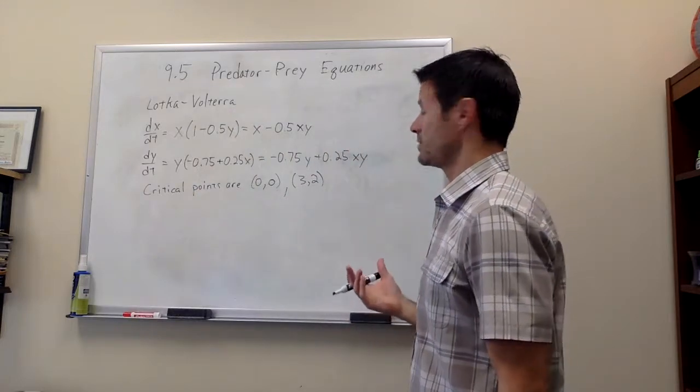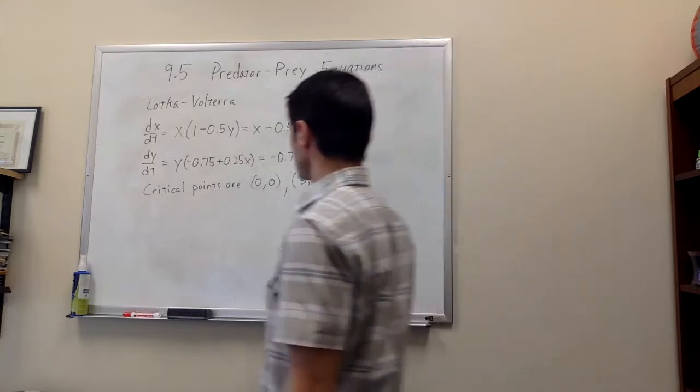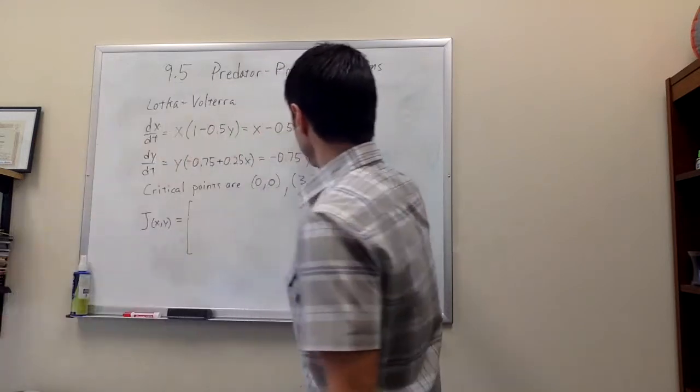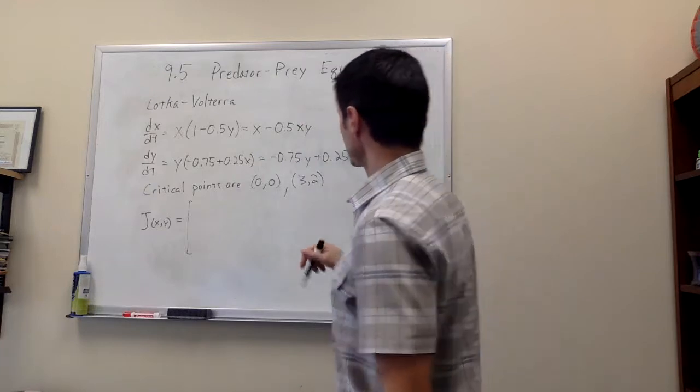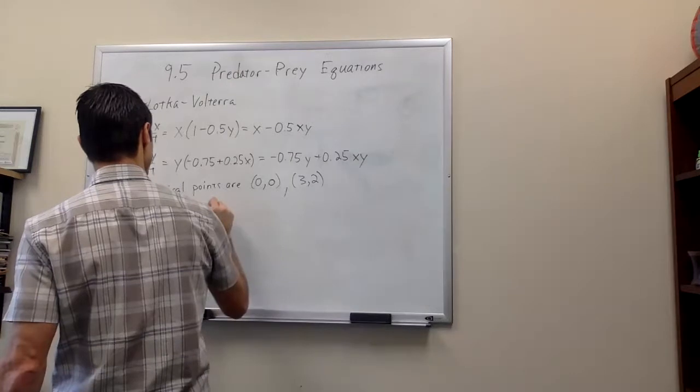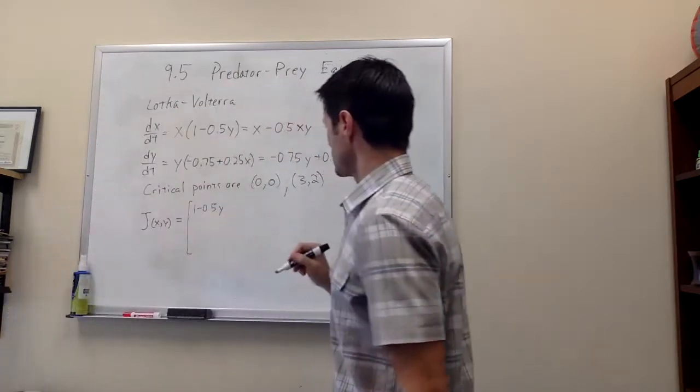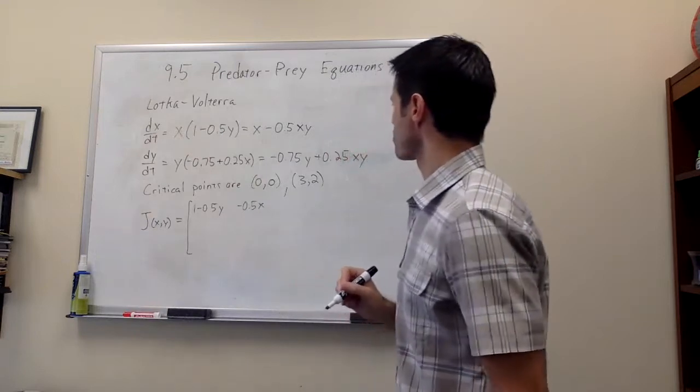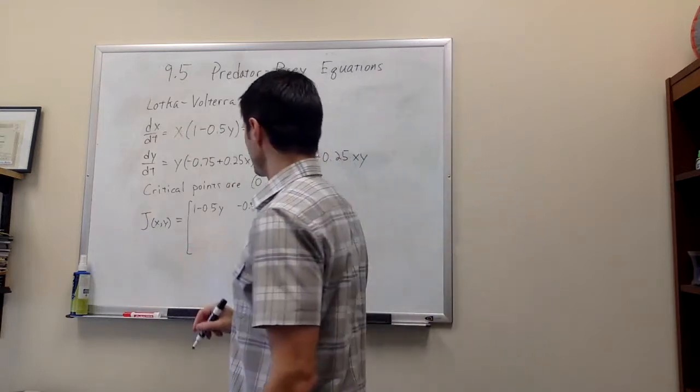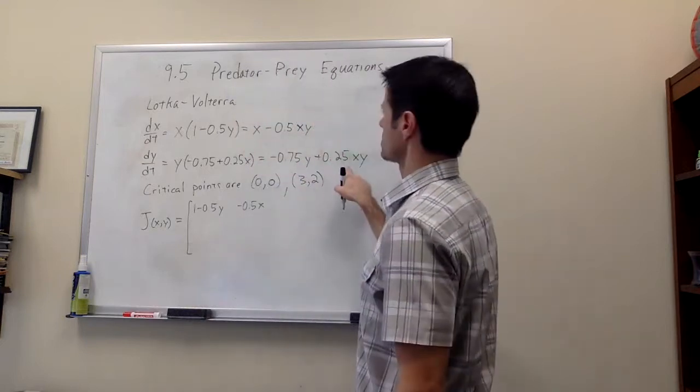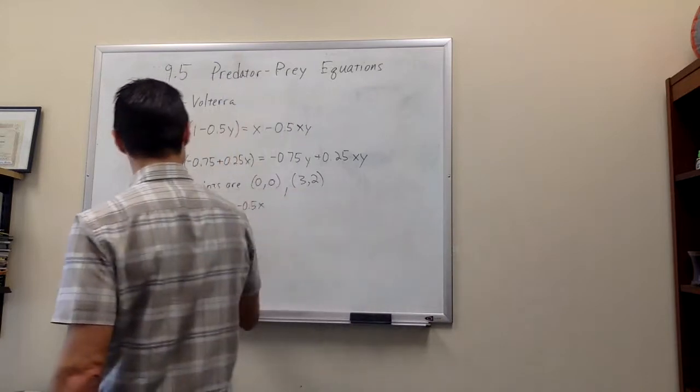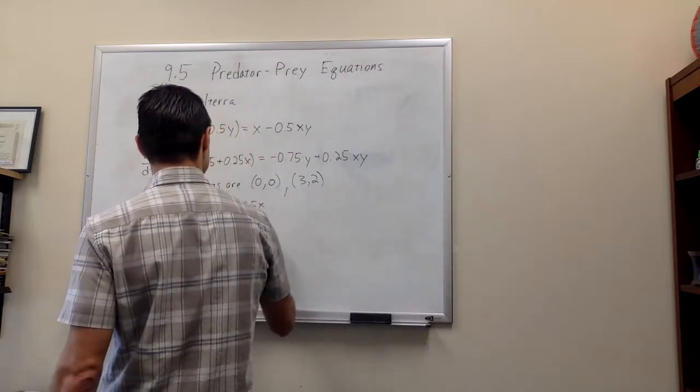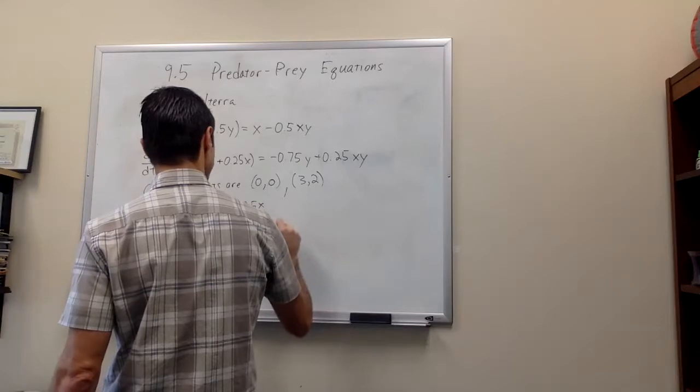So now let's compute the Jacobian. We take our first equation, dx dt, and differentiate with respect to x. So we get 1 minus 0.5y. And then we differentiate with respect to y, which is minus 0.5x. And in the second row of the Jacobian, we differentiate dy dt with respect to x, and we get 0.25y. And then in this entry, minus 0.75 plus 0.25x.